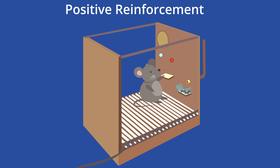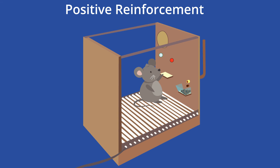Because the animal would want to get more food, it now had incentive to push the lever or button more and more frequently. Skinner called this scenario positive reinforcement, in which something pleasant is given to encourage a certain behavior — in this case, hitting the lever or button.